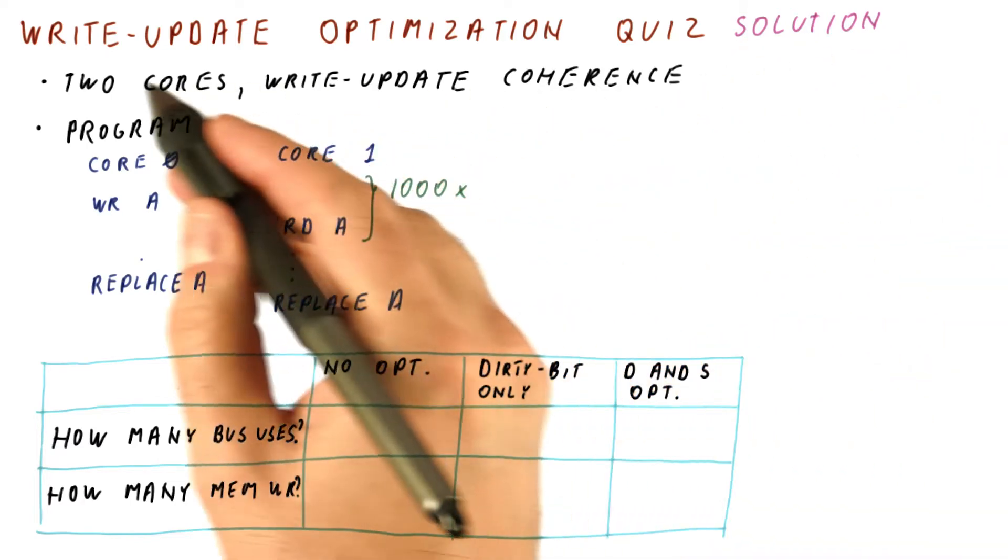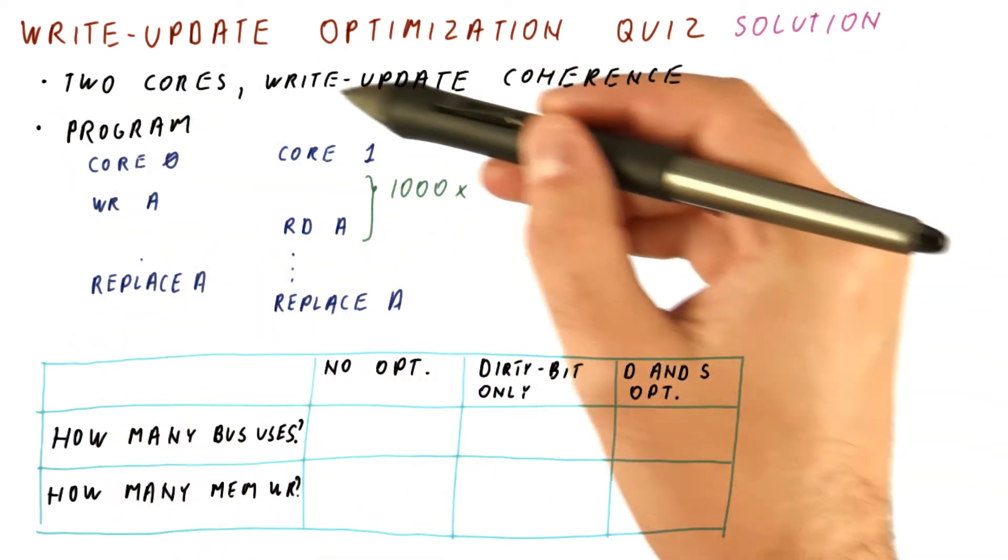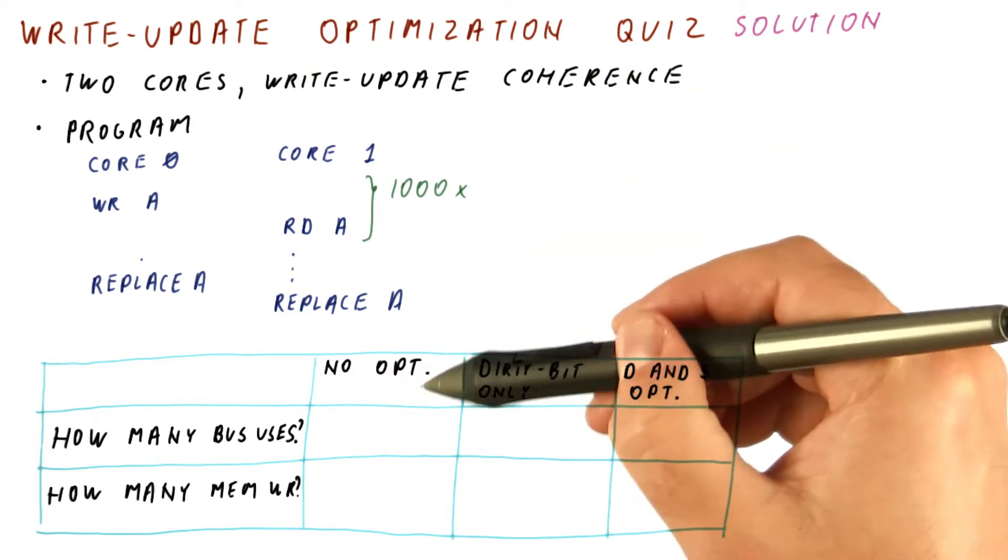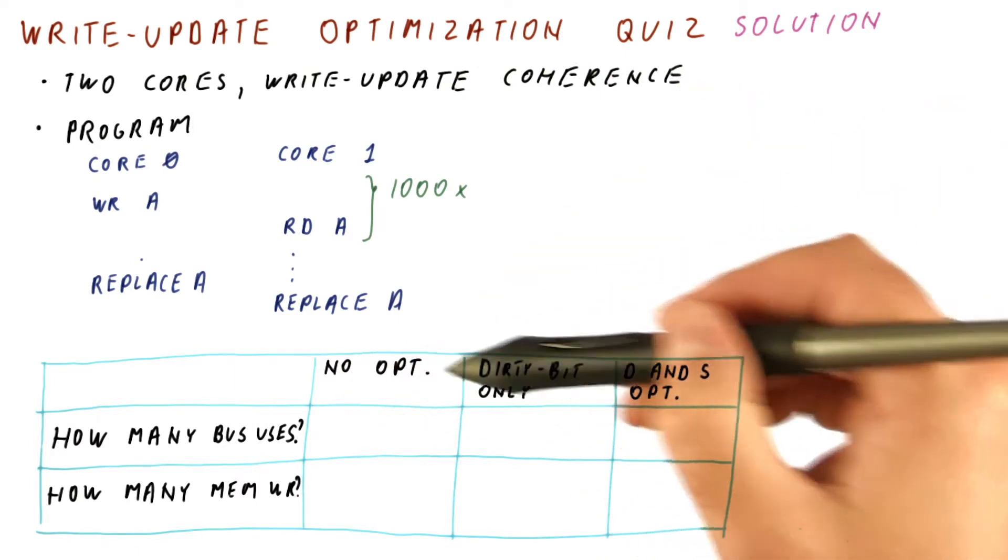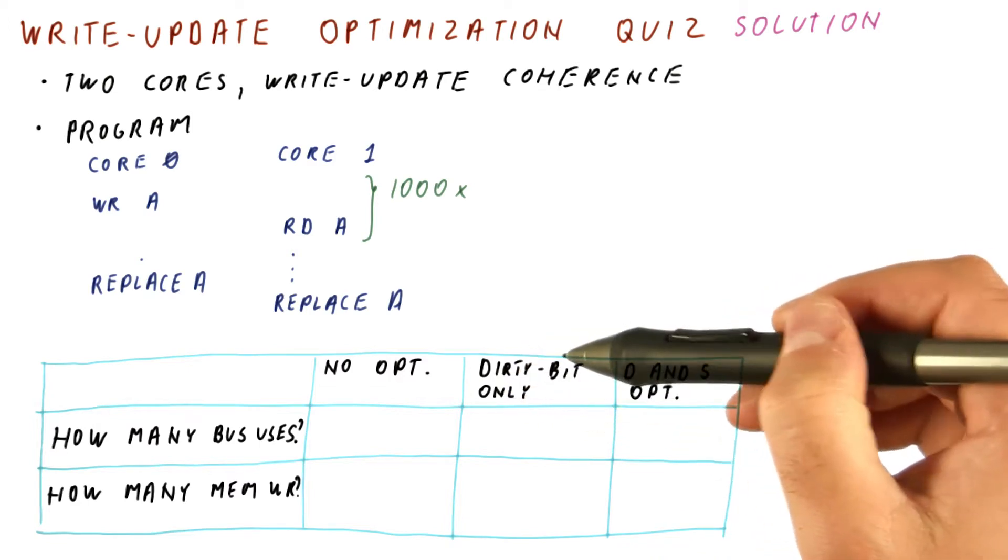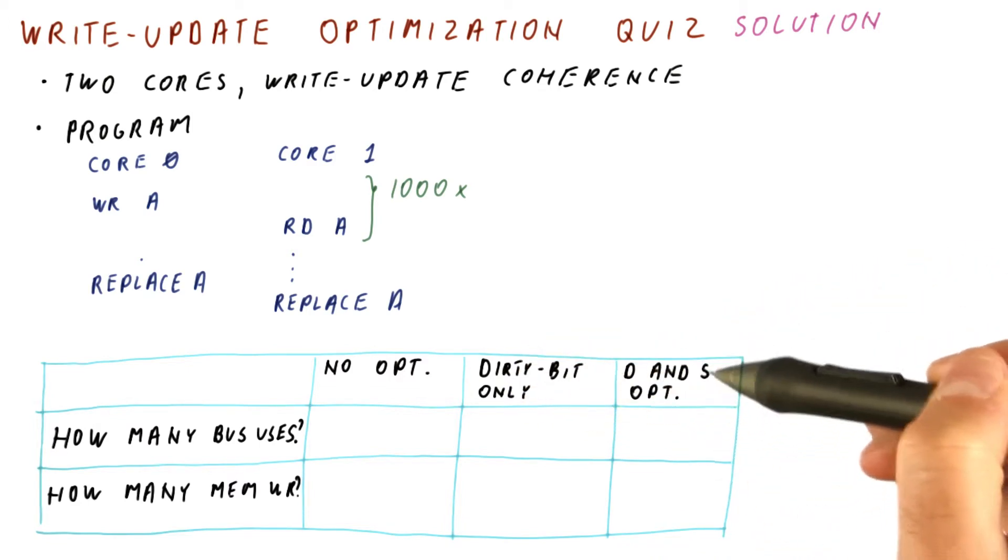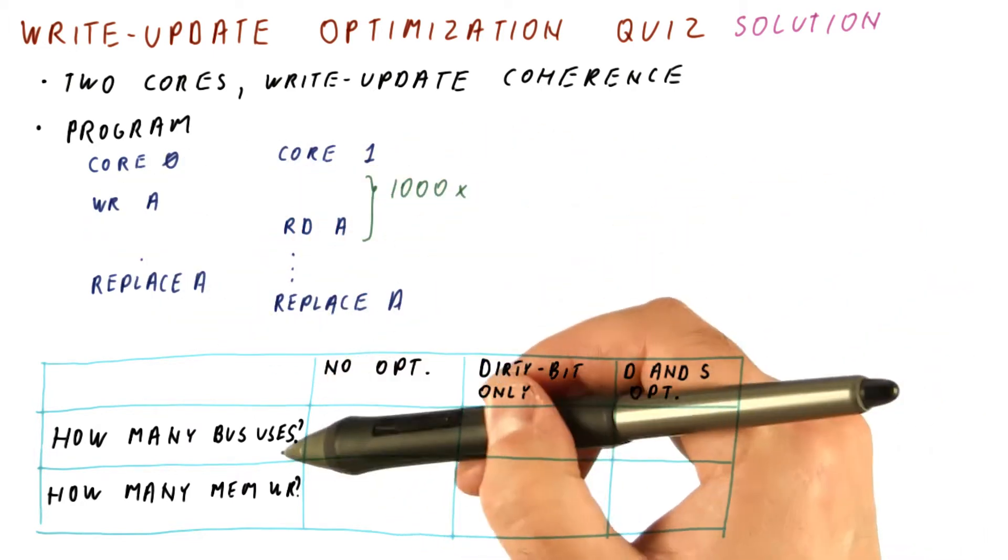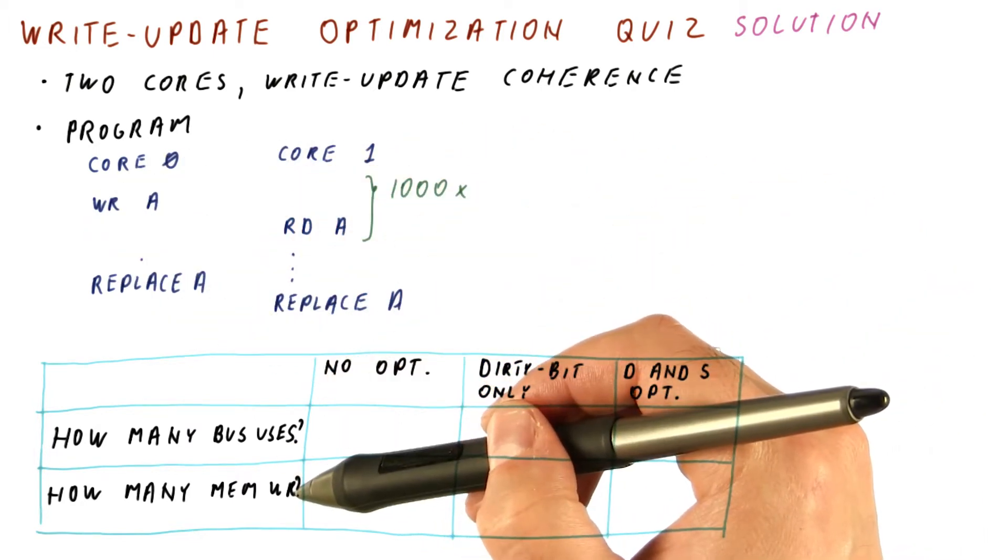Let's look at the solution to a write-update optimization quiz, where we have two cores with write-update coherence. We consider the case of no optimization, dirty bit only optimization, and both dirty bit and shared bit optimization. For this program, how many bus uses and memory writes do we get?